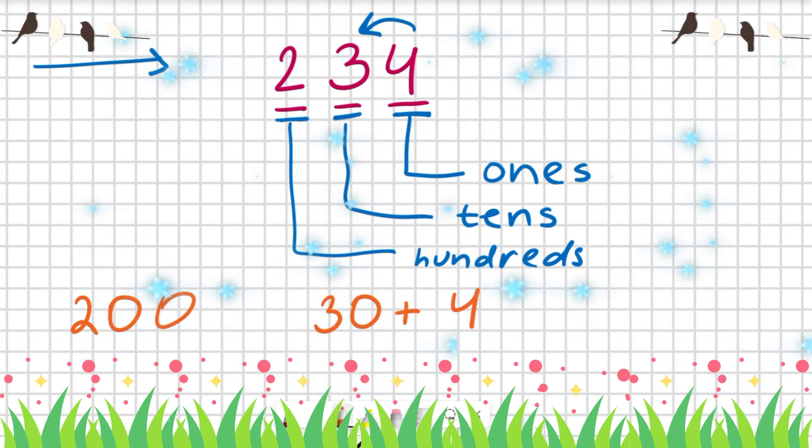If we plus three of them, we get the major number: two hundred, thirty, four.